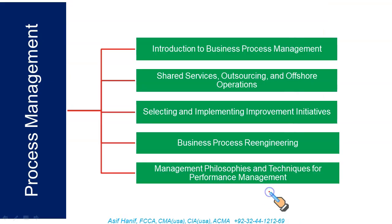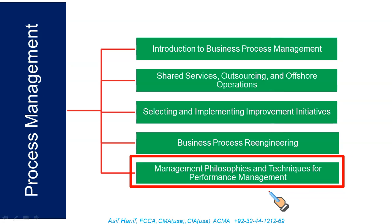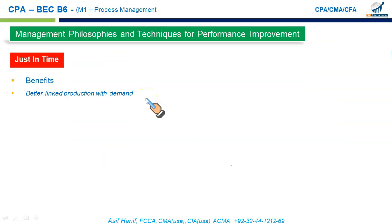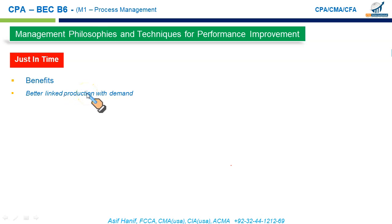The last sub-module covers management philosophies and techniques for performance management. First, Just-In-Time (JIT): as the name suggests, JIT means deploying resources just in time to meet customer or production needs. Benefits include better linking of production with demand — production starts only when a customer order is received. This is a pull system, in contrast to MRP's push system, where goods are produced just in case a customer might come.